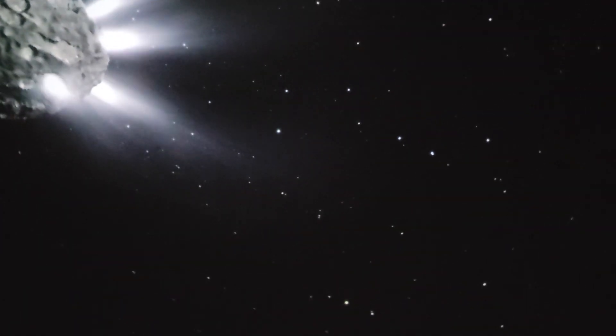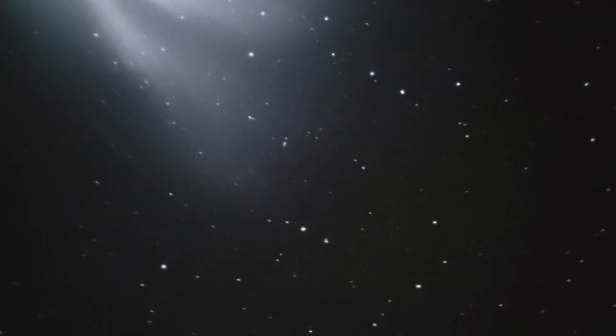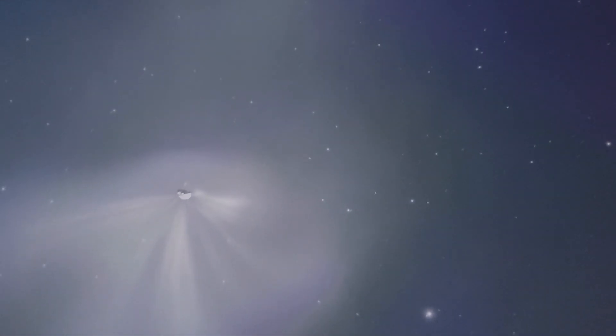Today, we know that comets begin as chunks of ice and rock that orbit around the sun, far beyond the planets of our solar system. If one of them is pulled into an orbit closer to the sun's heat, its icy surface changes from solid to gas, unleashing an enormous tail of rock and dust that's millions of miles long.